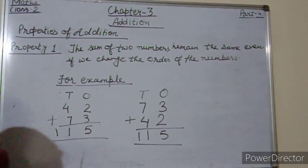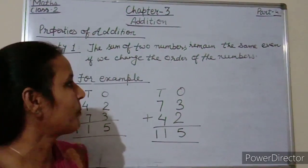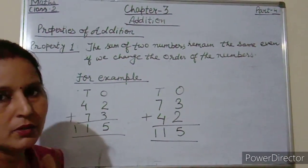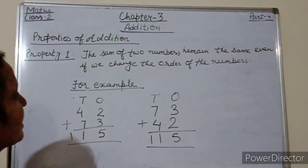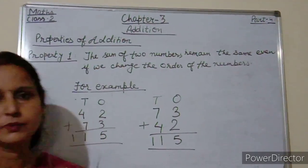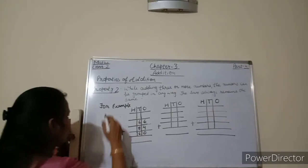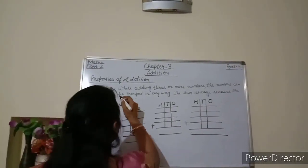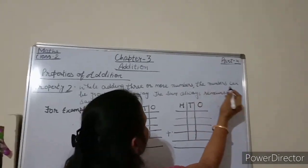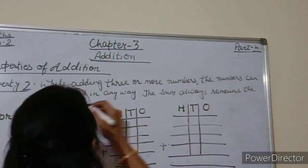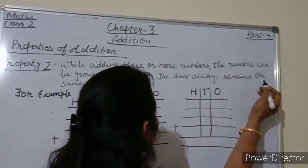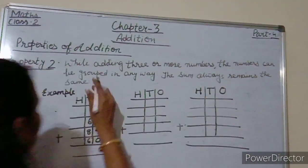Any problem in property 1? Now start property number 2. While adding 3 or more numbers, the numbers can be grouped in any way. The sum always remains the same.